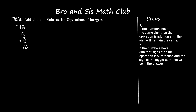The step also says the sign will remain the same. So positive 9 and positive 3 — I'll take the positive sign — and positive 9 plus positive 3 is equal to positive 12.